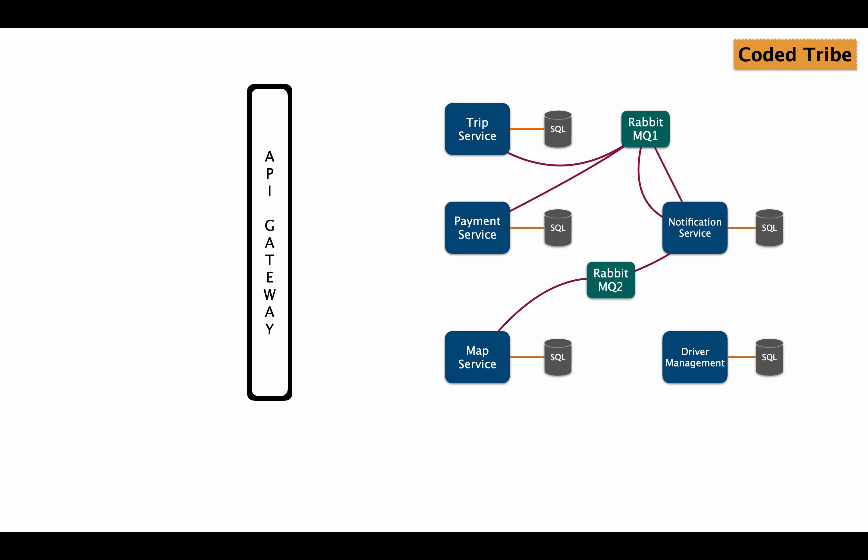The job of the API gateway is to take the client's request and route it to the particular microservice, also invoking microservices to get the response the client needs. Here I have multiple microservices — trip service, payment service, map service, and others — all sitting behind an API gateway. The client interacts only with the gateway, not individually with each service.